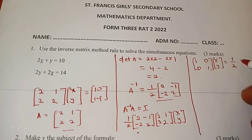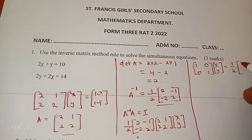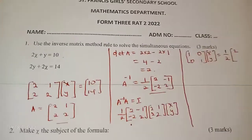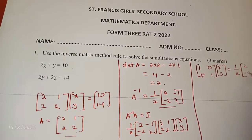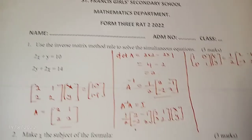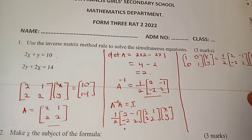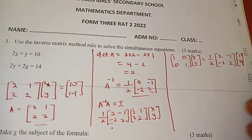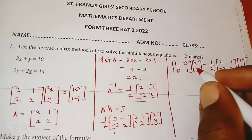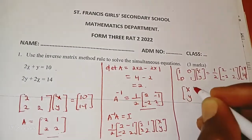So I will have 1 over 2 into [2, negative 1; negative 2, 2], negative 2, then I take that is 10 and 14. When you multiply anything by an identity you get the number itself, so I get x and y.